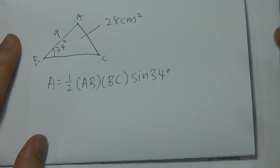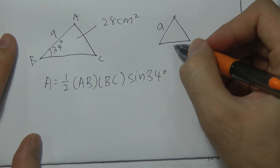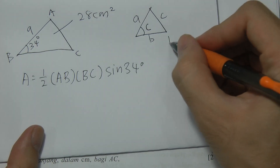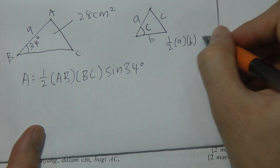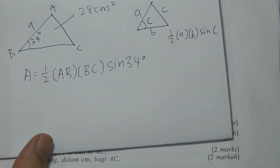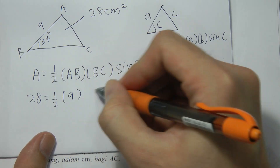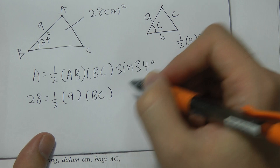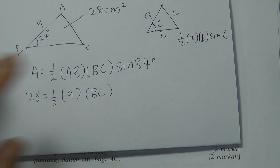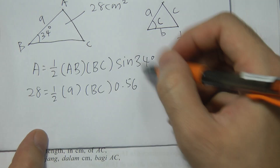In the triangle ABC, the angle C is the included angle between sides a and b. So normally the formula is ½ × a × b × sin C. Now we have the area equal to 28, so: 28 = ½ × 9 × BC × sin(34°). sin(34°) gives us approximately 0.56.